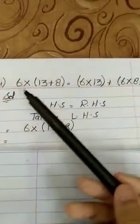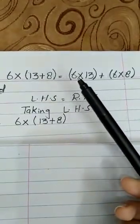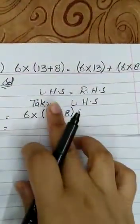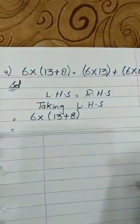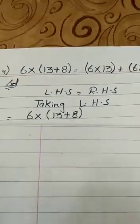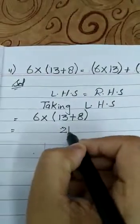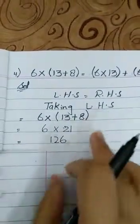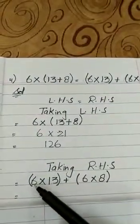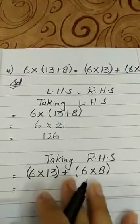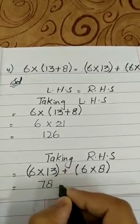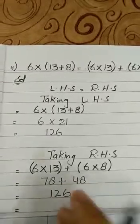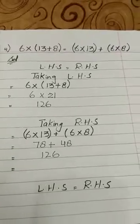Another question: 6 × (13 + 8) = 6 × 13 + 6 × 8. Taking left hand side: 13 + 8 = 21, then 6 × 21 = 126. Taking right hand side: 6 × 13 = 78, plus 6 × 8 = 48, so 78 + 48 = 126. Both sides are equal, so LHS = RHS. Thank you students.